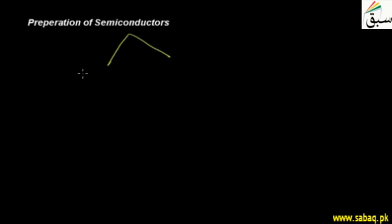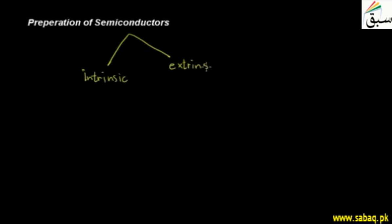What are semiconductors? We have two types of semiconductors. One type is intrinsic semiconductors, and the other type is extrinsic semiconductors.